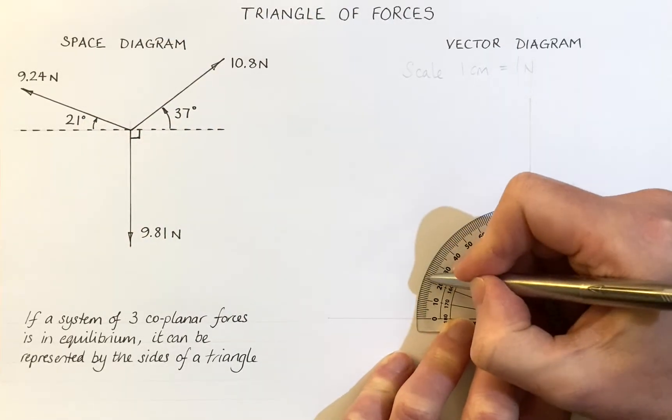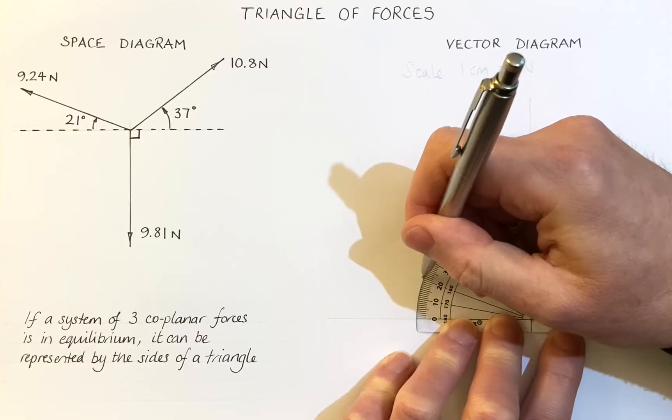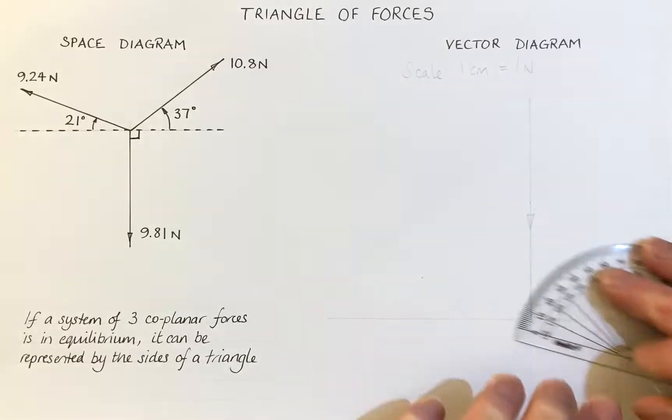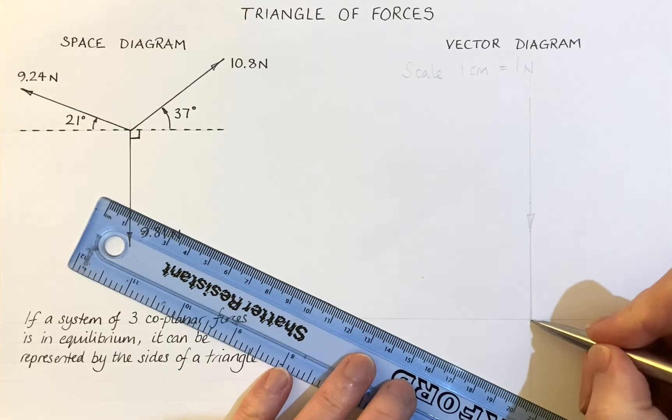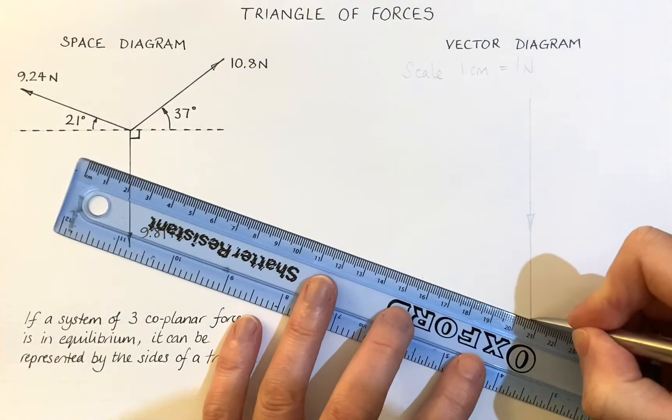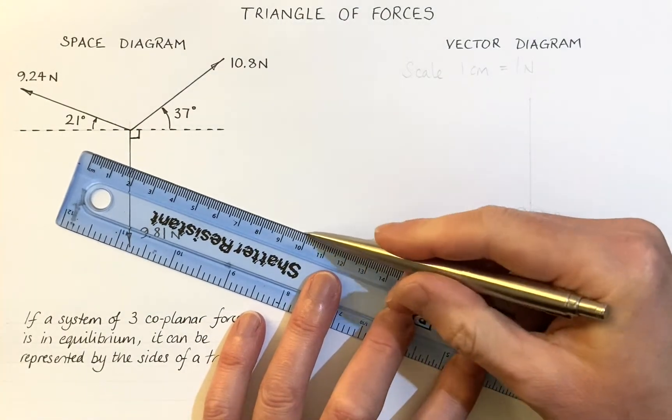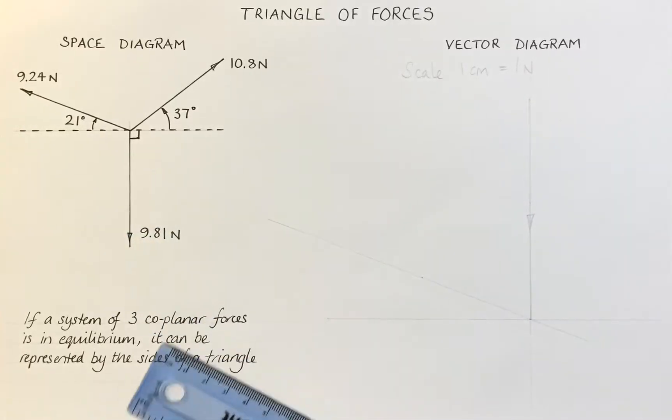Here we go. 10, 20, 21 degrees there. Again, I'm going to draw a faint line first. There's our faint line first.